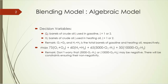The objective function is: 75 times the sum of G1 and G2, plus 60 times the sum of H1 and H2, plus 65 times (5,000 minus G1 minus H1), plus 50 times (10,000 minus G2 minus H2).